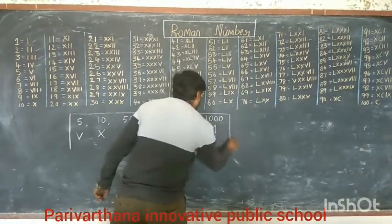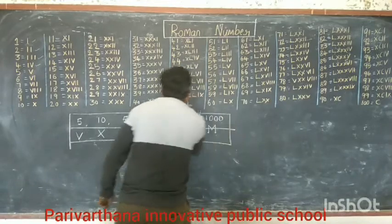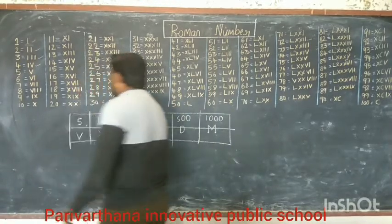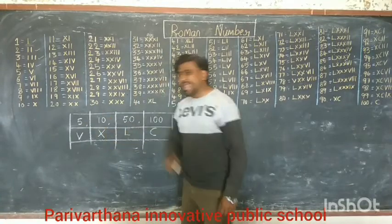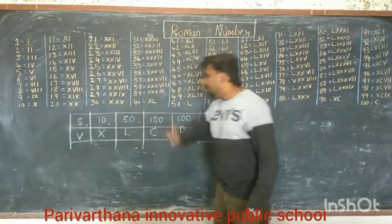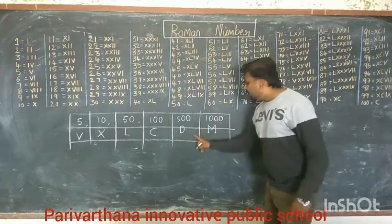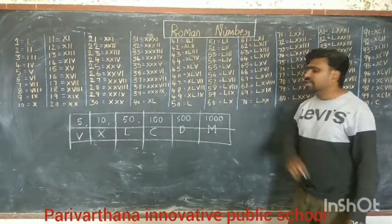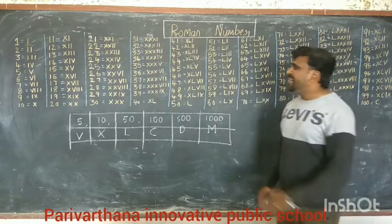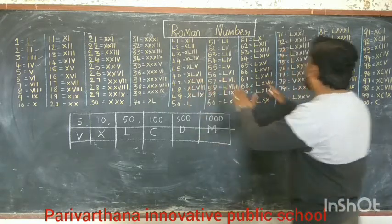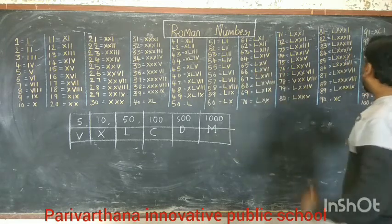If you remember these symbols — 5 is V, 10 is X, 50 is L, 100 is C, 500 is D — you can easily write Roman numbers from 1 to 100. This is the complete Roman number system from 1 to 100.